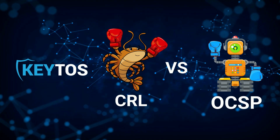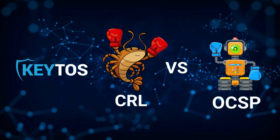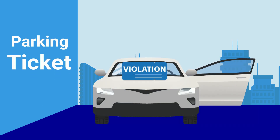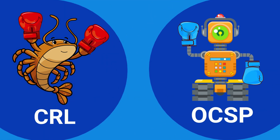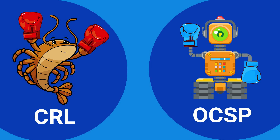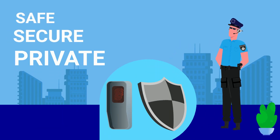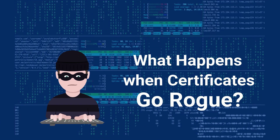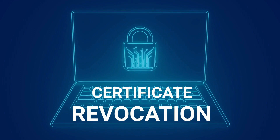Today, we're diving into a topic that's crucial for the security of your online transactions, but often gets about as much attention as a parking ticket — CRLs and OCSP. I'm talking about the digital certificates that keep your online life safe, secure, and private. But what happens when these certificates go rogue? That's where certificate revocation comes into play. Let's break it down.